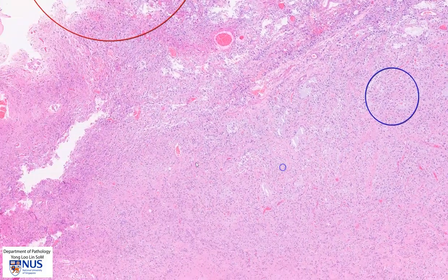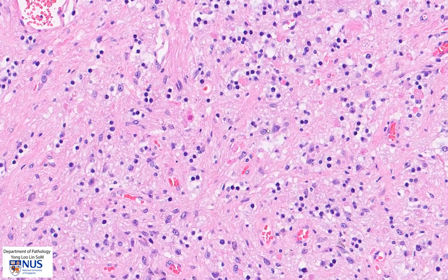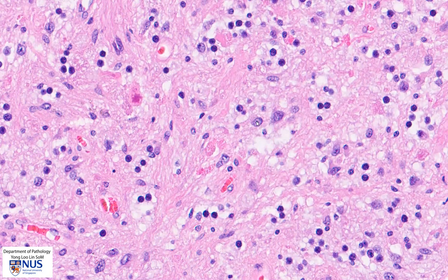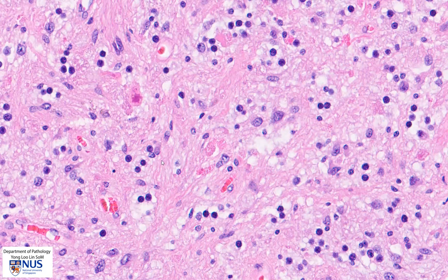Looking at the pinker areas, these are composed of neoplastic astrocytes. Many of the cells have oval nuclei, relatively even chromatin, and some have small nucleoli. What is very striking is that many of the cells have these long, hair-like cytoplasmic processes, known as pyloid processes. This is actually the reason why this tumor is known as a pilocytic astrocytoma, because pylo means hair and cytic is a cell — so the name is a descriptive name describing these long, hair-like processes.